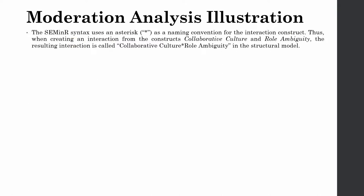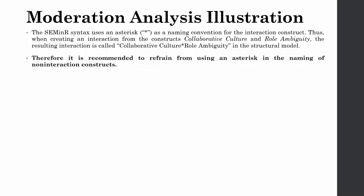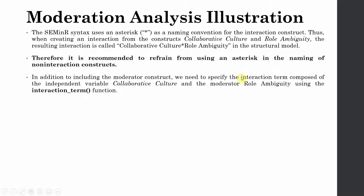The seminr syntax uses an asterisk as a naming convention for the interaction construct. When creating an interaction term from collaborative culture and role ambiguity, the resulting interaction is called collaborative culture multiplied by role ambiguity in the structural model. It is recommended to refrain from using this symbol in naming non-interaction constructs. We need to specify the interaction term composed of the independent variable and the moderator using the interaction term function.